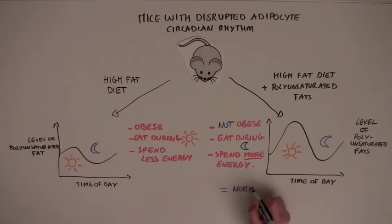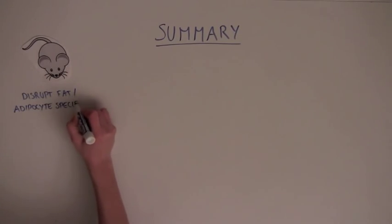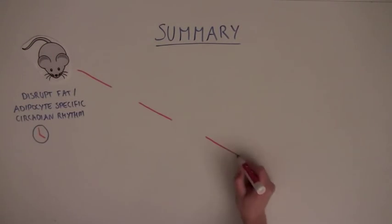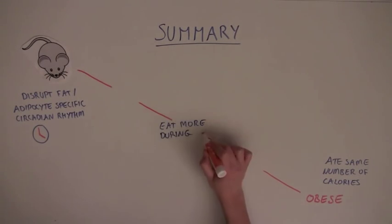Overall, they looked just like normal mice. So, what did this study show? Using a mouse to genetically disrupt the circadian rhythm, specifically in the adipocytes or the fat tissue, the scientists showed that these mice became obese not because they ate more calories overall, but because they ate more calories during the day, instead of at night.